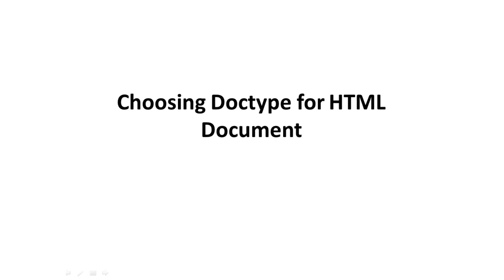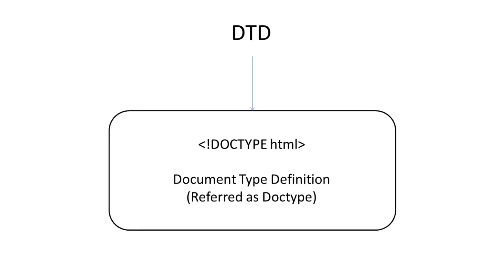In this tutorial, we will guide you on how to choose a doc type for an HTML document. The first thing in any HTML document is the DTD declaration. DTD stands for Document Type Definition and is referred to as a doc type. A doc type is used by a web browser to determine which rendering mode is being used by the HTML document.